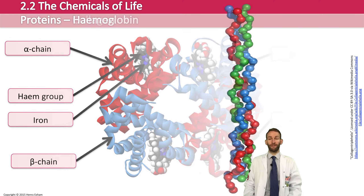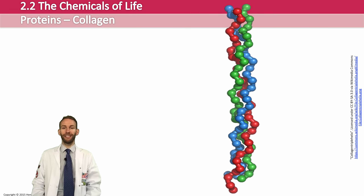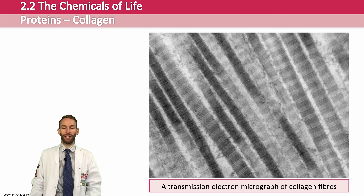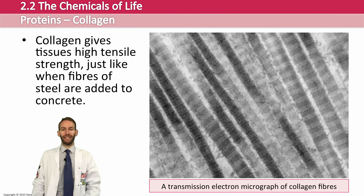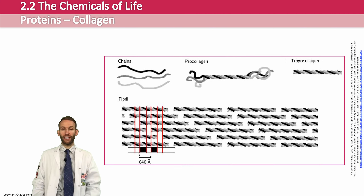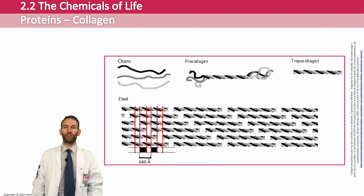Collagen is an example of a fibrous protein. Fibrous proteins have little tertiary structure. They are made up of long parallel polypeptide chains joined by cross-links to form fibers. This gives collagen its function as an extremely strong fibrous material found in tissues like bones, ligaments, tendons, and skin. Collagen is actually a triple helix, made up of three alpha chains held together by hydrogen bonds. These form structures called fibrils, which are then joined together to form collagen fibers — building up a really strong, rope-like fibrous structure.